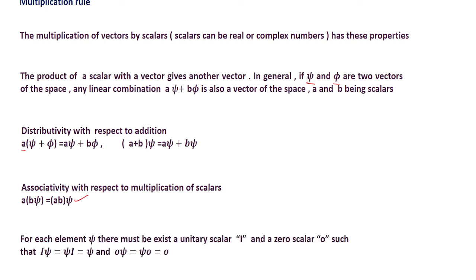For each element, there must exist a unitary scalar, such that the unit scalar multiplied by wave function Psi gives back the wave function Psi. So these are the properties of the linear vector space: the addition rules and multiplication rules. Whatever system follows these properties can be called a linear vector space.